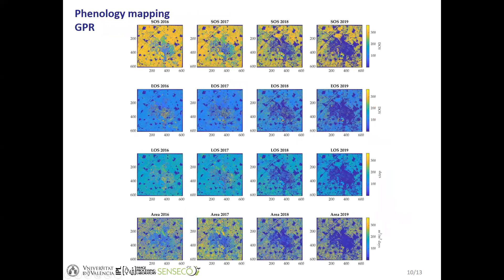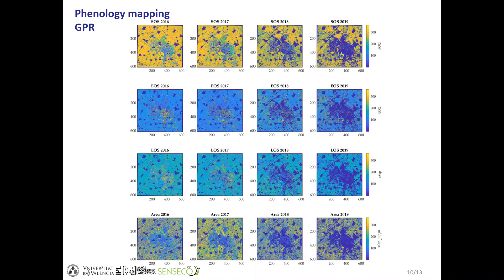Moving now to phenology mapping, using only the Gaussian process time series. Since there are two crop seasons within a year, we map them separately. This figure shows the phenological metrics of the winter season. For all years there is a similar spatial pattern. Some differences can be observed in 2018, where we detected an early green-up corresponding to later dormancy, possibly due to favorable weather conditions. 2017 was the year of maximum area estimated, and in 2019 there is a considerable proportion of pixels which are not mapped.